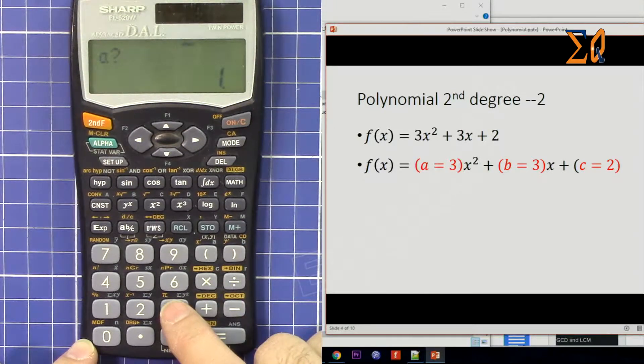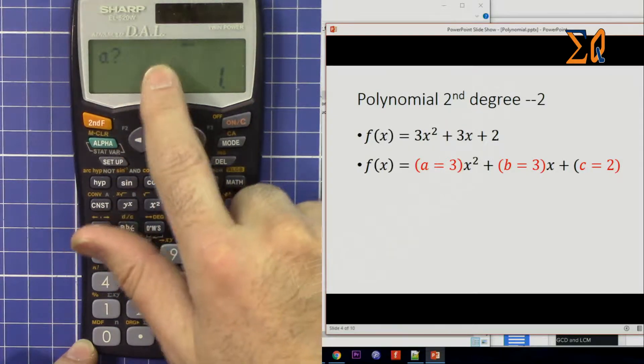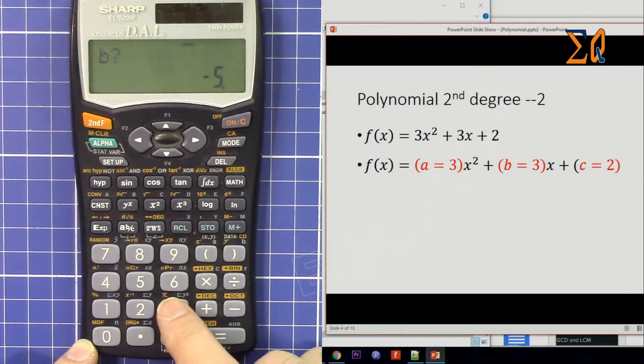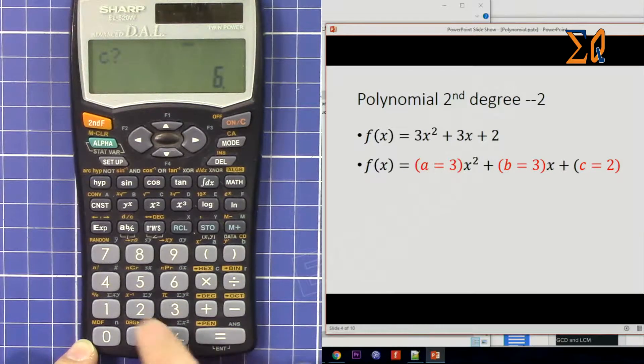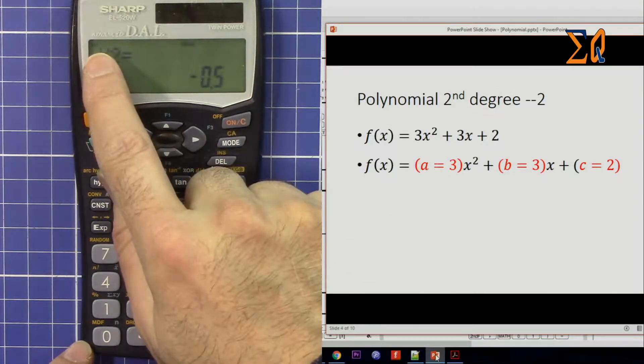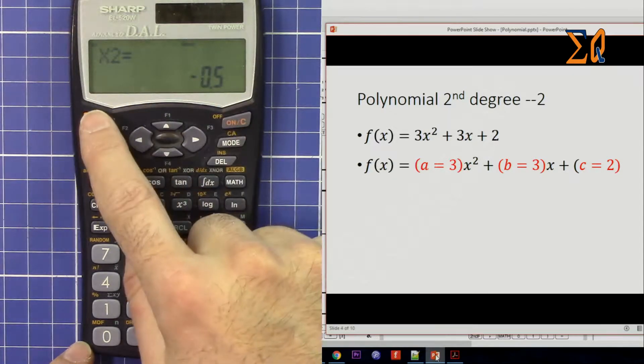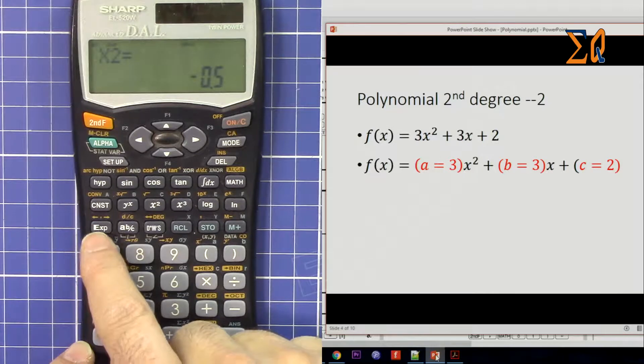Now this time a is 3. If you want to try something else, just enter the value. b is 3 and c is 2. The corner shows that this answer has imaginary part.